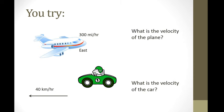So go ahead and give it a try. What is the velocity of the plane? What is the velocity of the car? This one is pretty easy. You can see it's 300 miles per hour to the east. I'm just going to say to east. You could also draw that as an arrow. If you really felt like it, you could have done it like this.